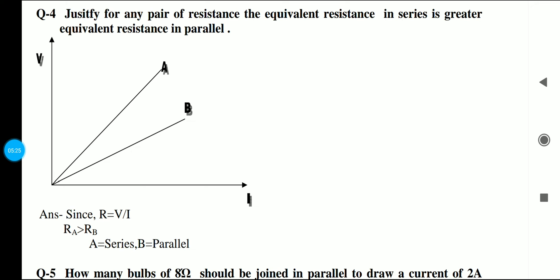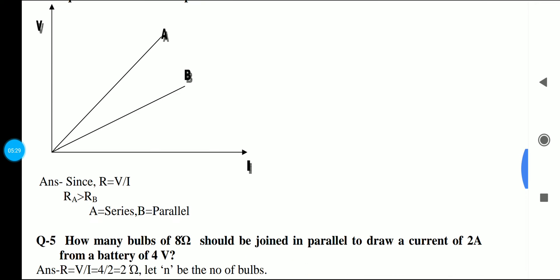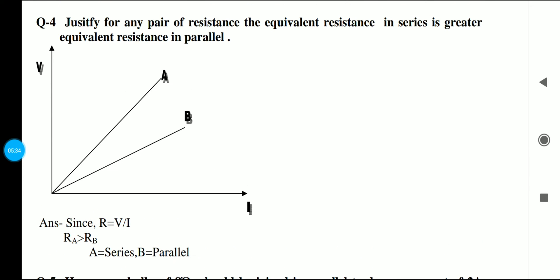Then there is a question of graph: justify for any pair of resistance the equivalent resistance in series is greater than equivalent resistance in parallel. If we have this graphical proof, we will make this diagram. We know that resistance is potential difference upon current. Resistance A is greater than resistance B. We have told that A is in series and B is in parallel.